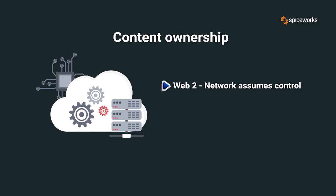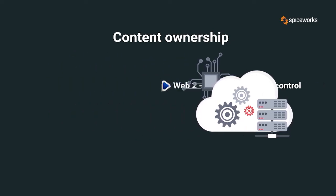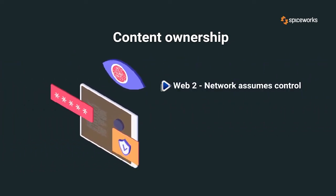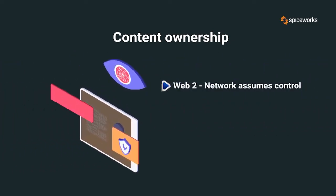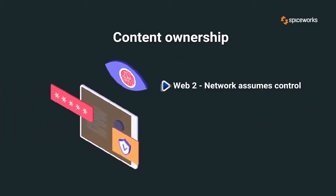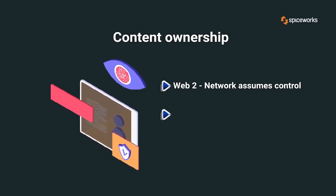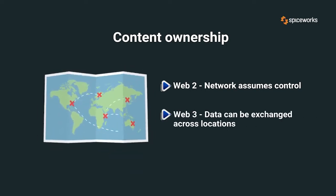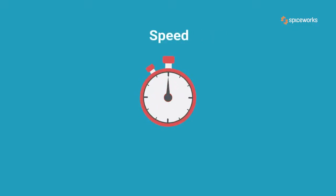Content ownership: with Web 2, the network assumes control for information storage, causing access issues and concerns about the anonymity and protection of online data. Web 3 solves this problem by letting data be exchanged in several locations simultaneously.